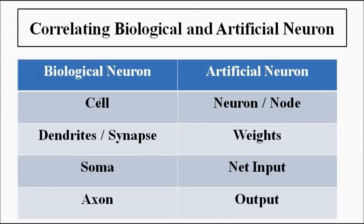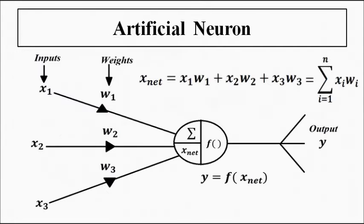So to summarize the correlation: the whole cell corresponds to the neuron or node; the dendrites and synapse correspond to the weights in the artificial neuron; the soma or cell body which carries the nucleus corresponds to the net input; and the axon corresponds to the output y. This is how we correlate a biological neuron with an artificial neuron.